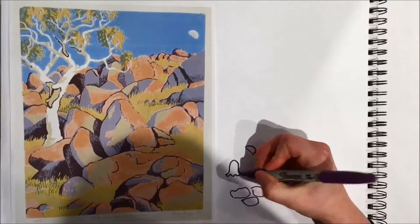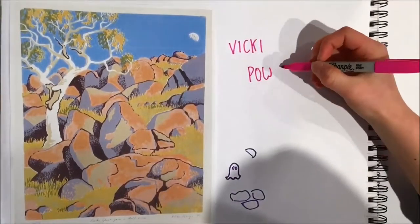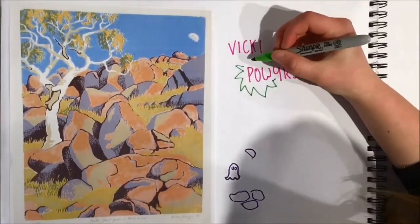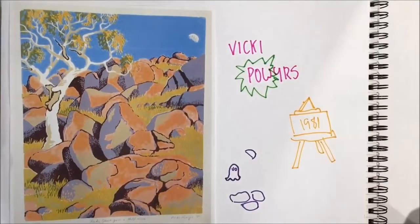The second form of art we will show you is called Rocks, Ghosts and Half Moon and it was painted by Vicki Powers in 1981 using a screen print. This is different again to painting as it's using a screen print, not a paintbrush and paint.